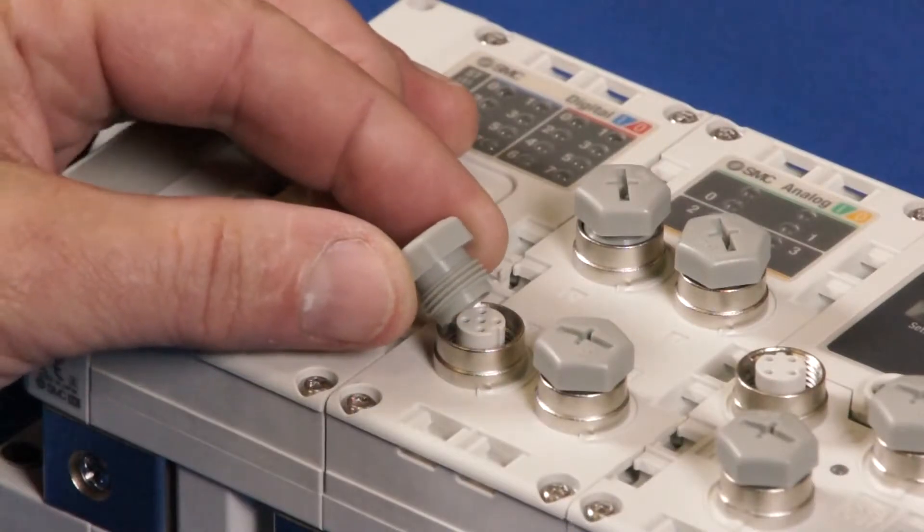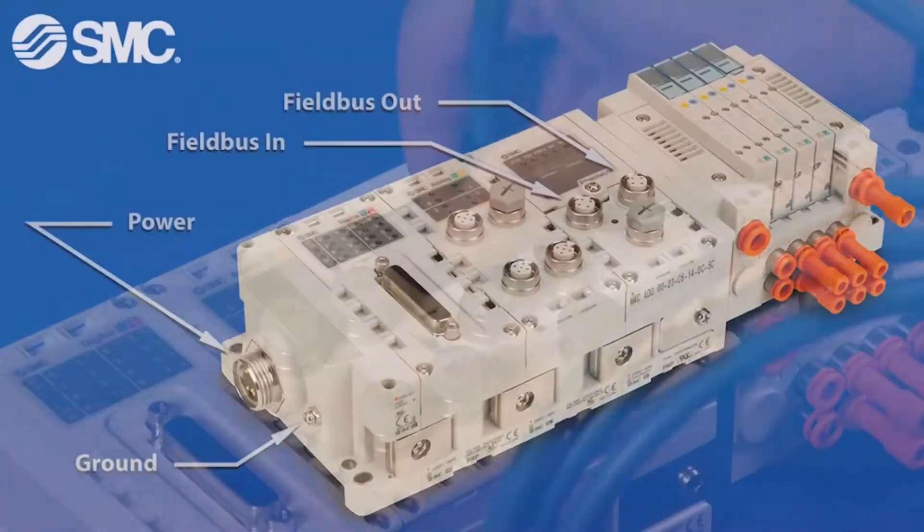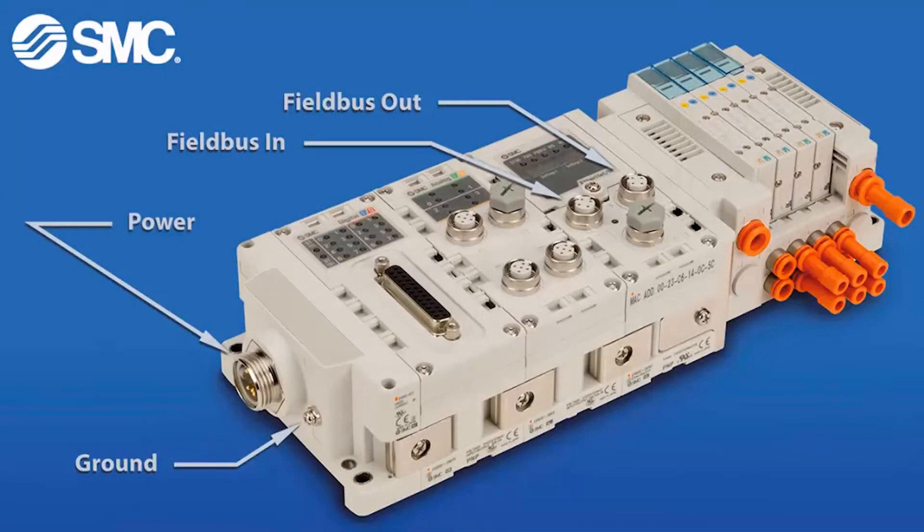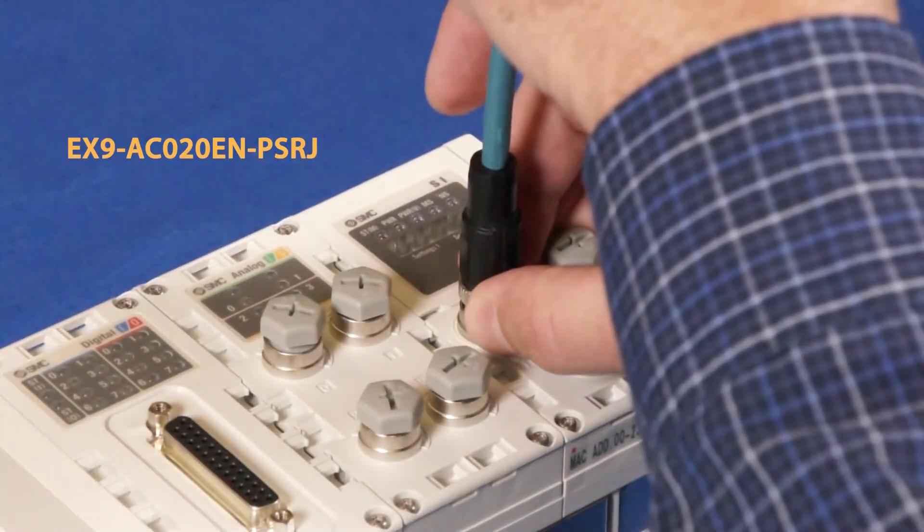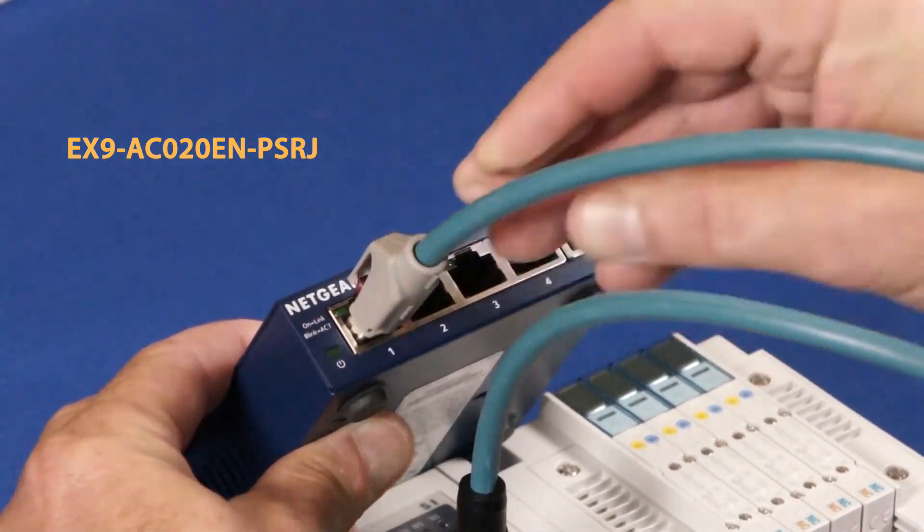Plug all the unused M12 IO ports to assure its IP rating. Now, make the field bus cable connection. Use the upper left M12 port. The RJ45 connector on the other end connects to the switch.